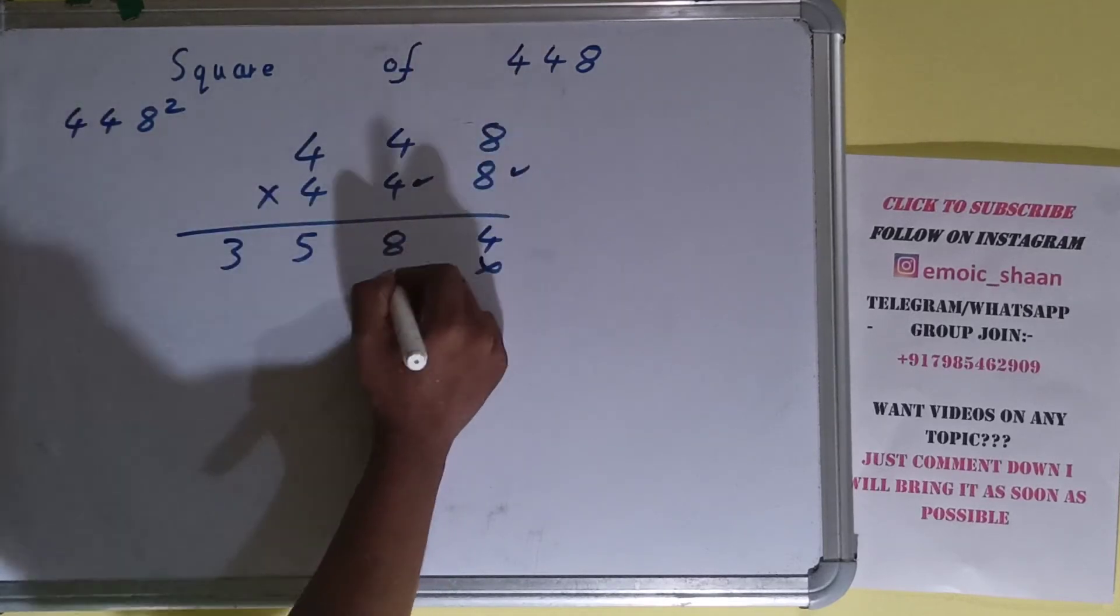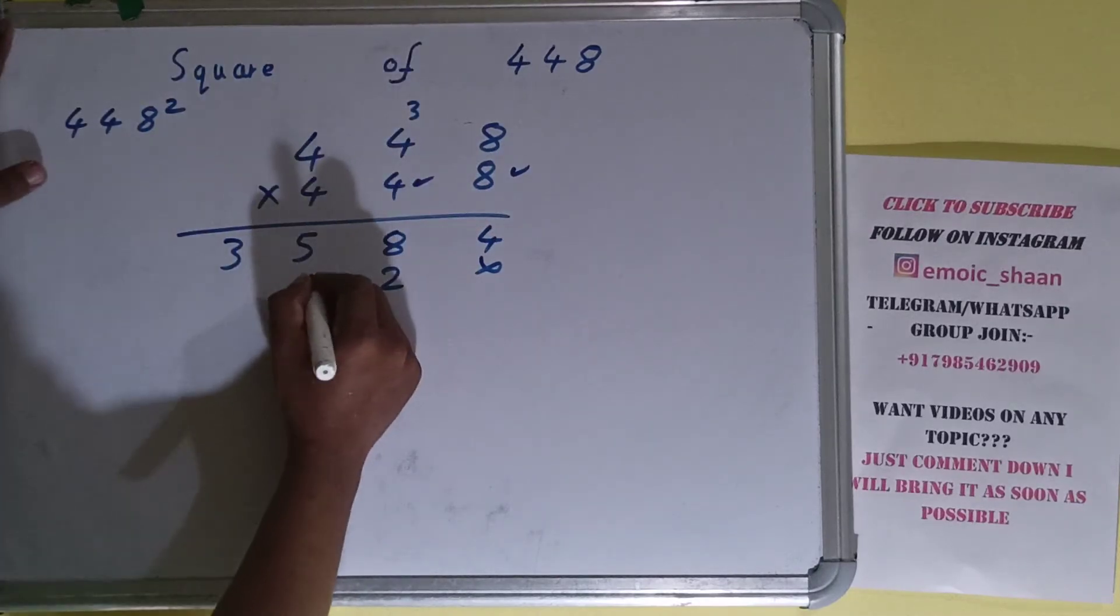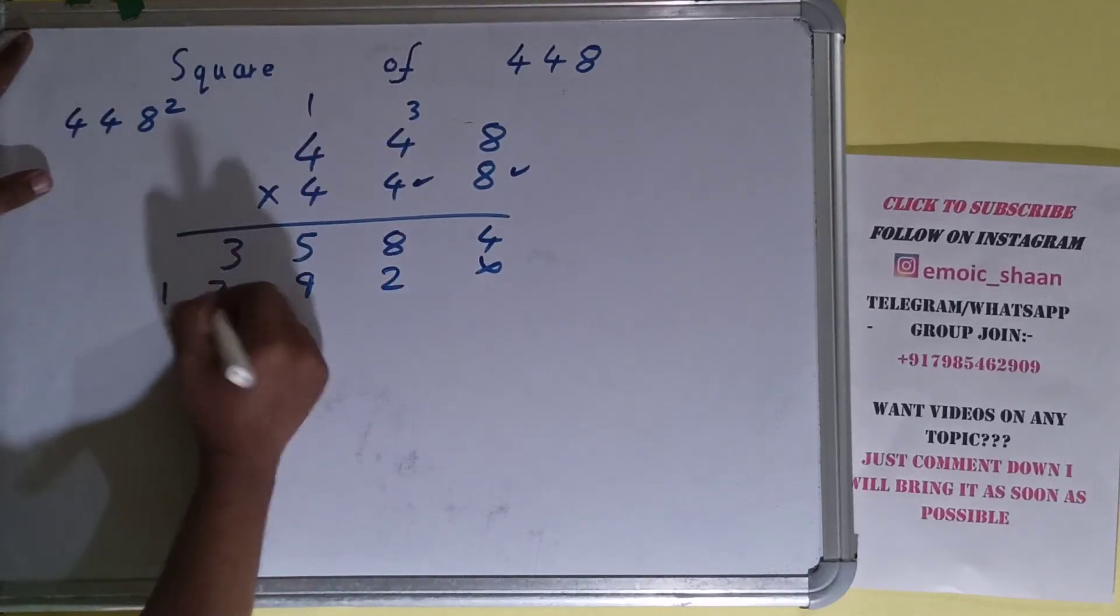Now this 4 times 8 is 32, 3 carry. 4 times 4 is 16 plus 3 is 19, 1 carry. 4 times 4 is 16 plus 1 is 17.